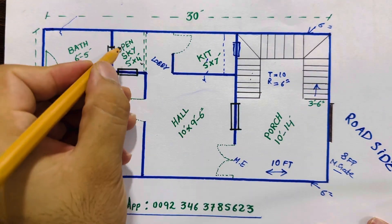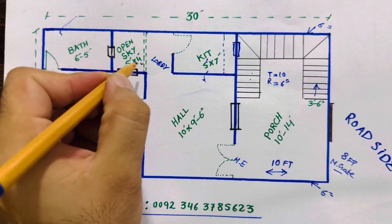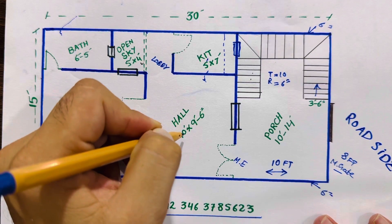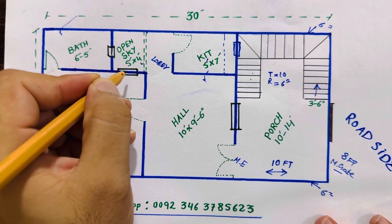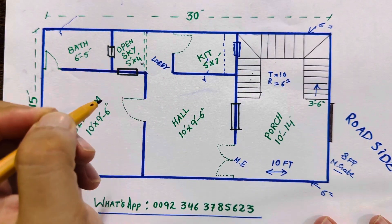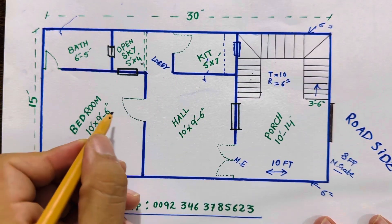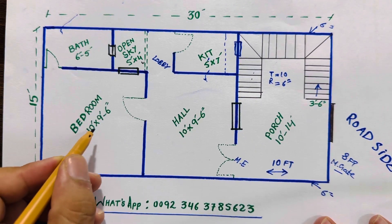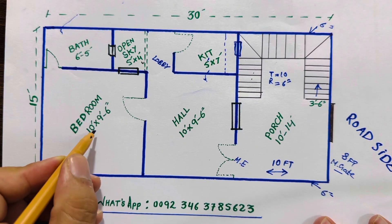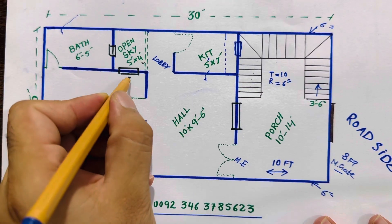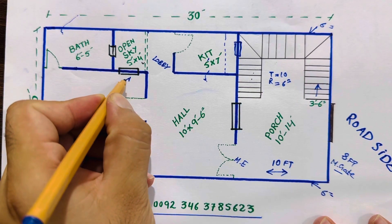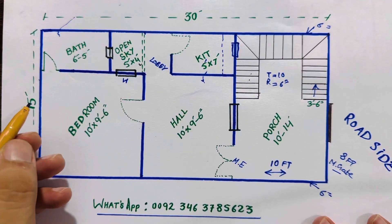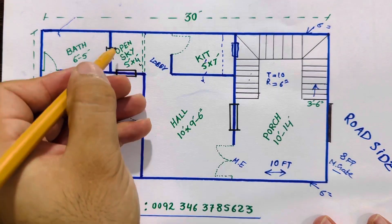You can see this is open to sky for proper ventilation, especially for this hall, which size is 5 feet by 4 feet. This is the first bedroom size, 10 feet by 9 feet 6 inches. And this is its window to this open-to-sky area.